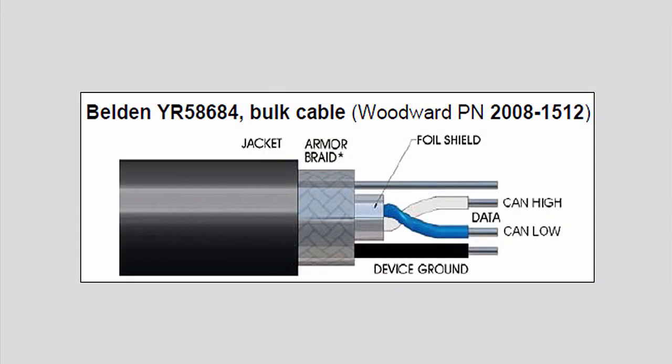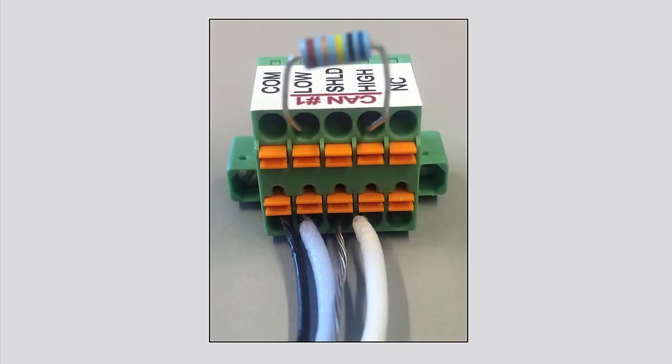To wire to the controller's CAN connections, Woodward recommends the Belden YR58684 communications CAN cable. This is a smaller and flexible 22-gauge low-capacitance cable suitable for tight routing in industrial environments. For robust communications performance, the CAN cabling needs to minimize the exposed non-shielded cable section that occurs at terminal blocks. The exposed length of CAN wiring must be limited to less than 3.8 cm or 1.5 inches from the end of the shield to the terminal block.